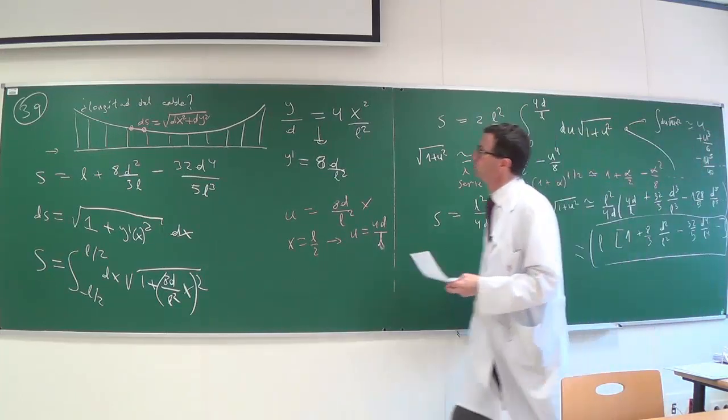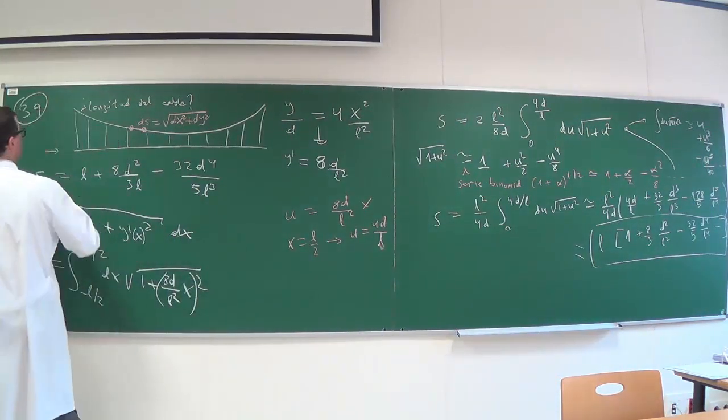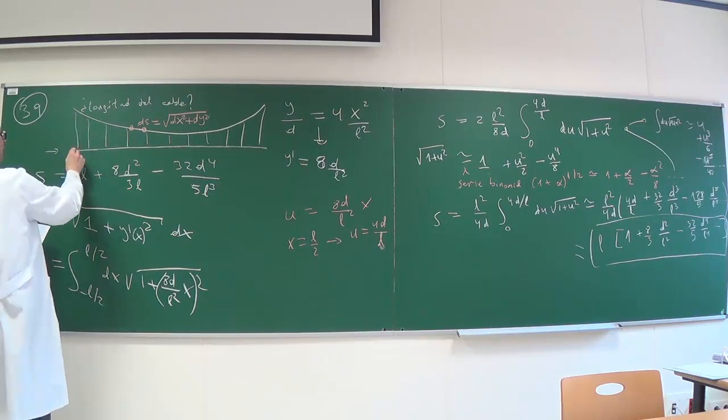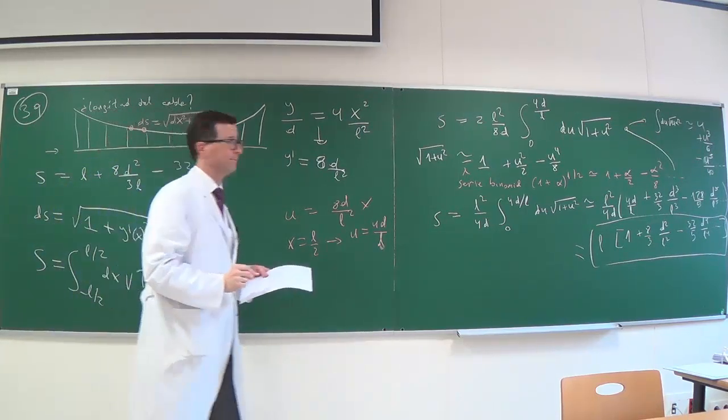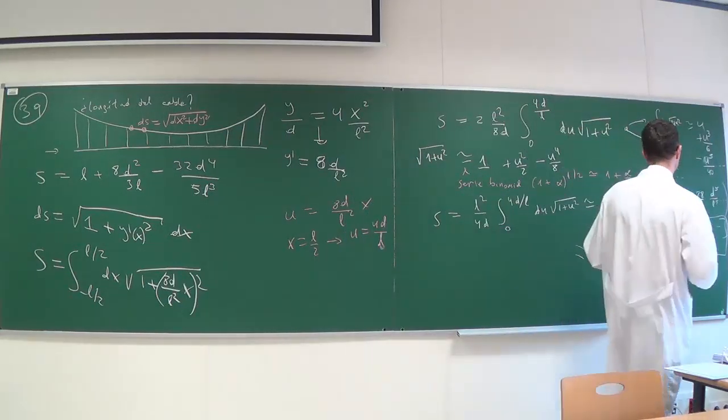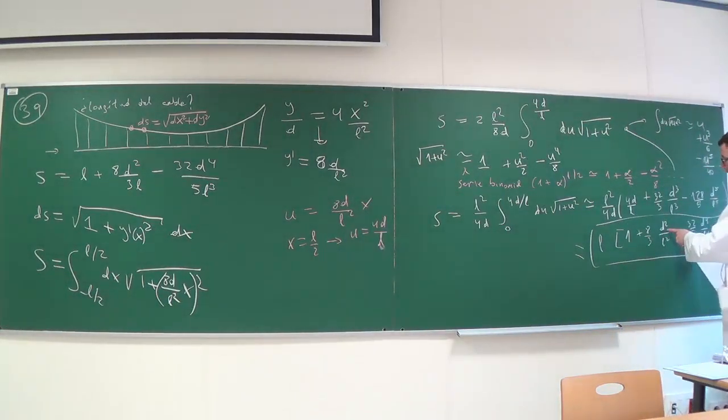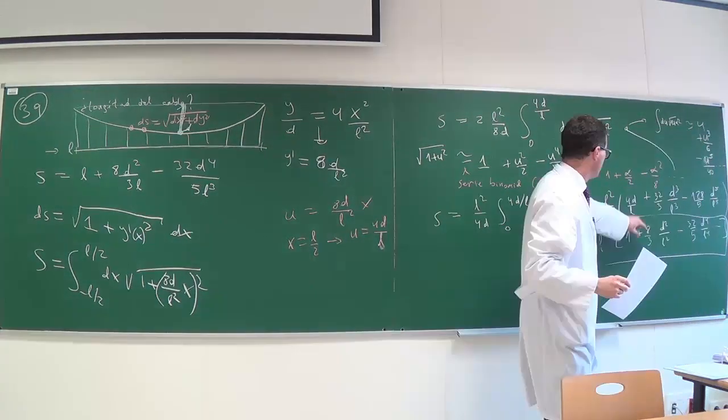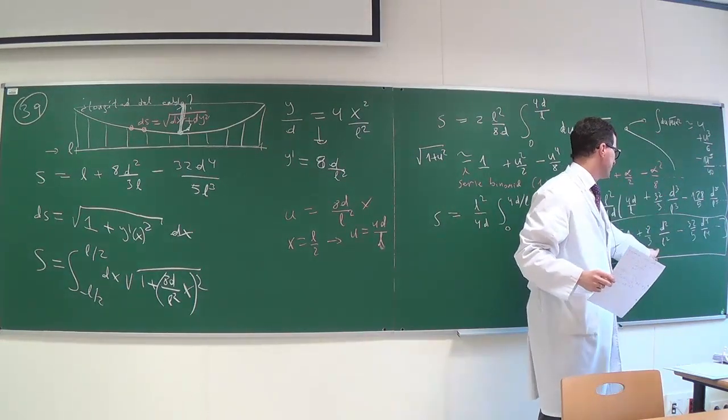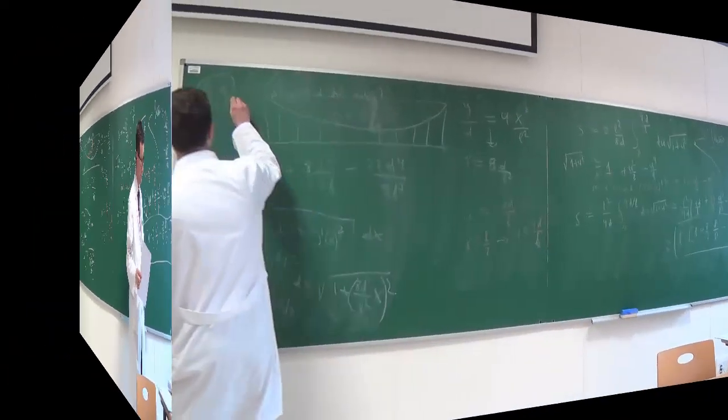We simplify the parenthesis and it becomes L times (1 plus 8/3 D² divided by L² minus 32/5 D to the fourth divided by L to the fourth). How do we interpret the solution? The first term simply indicates that the length of the cable is the length of the roadway, L. Then there is a quadratic correction in D divided by L that increases the length, it overshoots and then corrects downward.